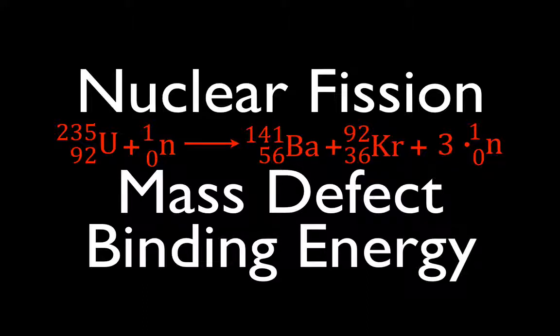In today's video, as you can see, we're going to be going over a problem involving mass defect and binding energy. We're going to figure out the amount of energy released during nuclear fission of uranium-235.